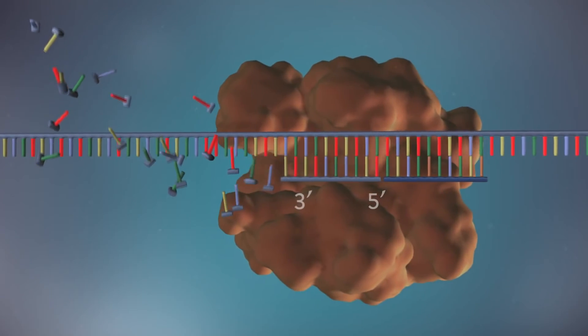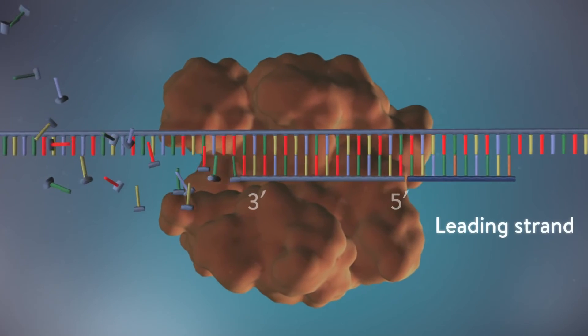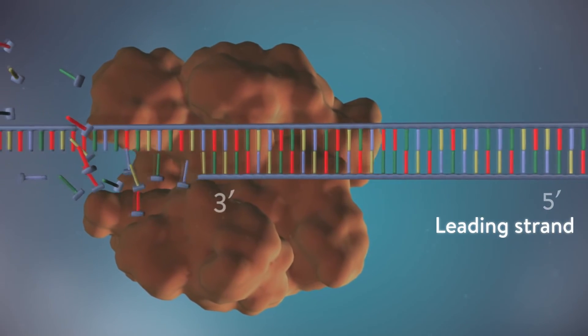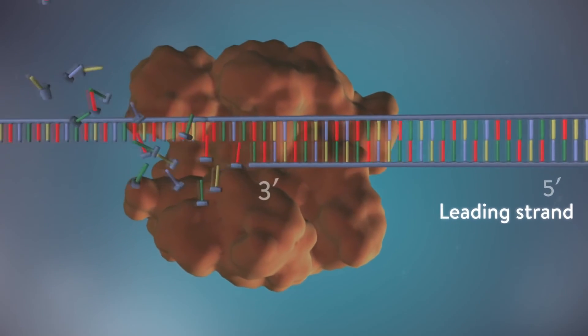One of the new strands of DNA, the leading strand, is made continuously, the DNA polymerase adding bases one by one in the five prime to three prime direction.